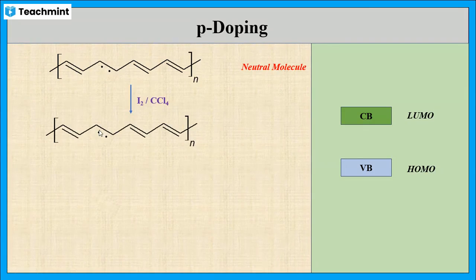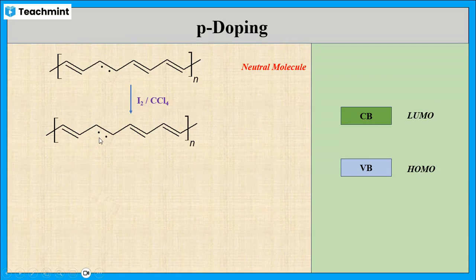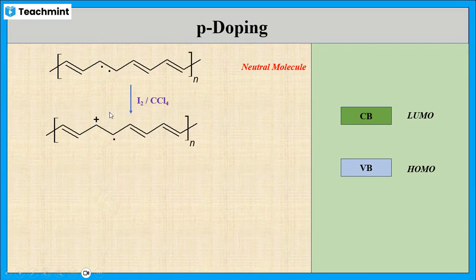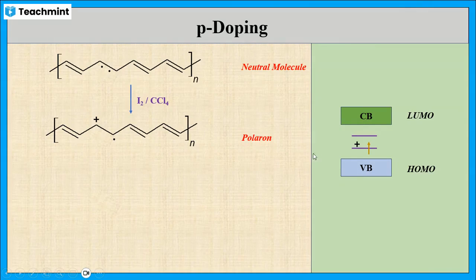The dopant takes one electron from the pi backbone and creates a positive center. As you can see, out of the two electrons of a pi bond, one electron is removed, so that one electron is left and a positive charge is created. This radical positive ion molecule is called a polaron. Due to the formation of the radical ion, the energy of this single electron increases and moves above the valence band. The hole and one electron will be in between the valence band and the conduction band.